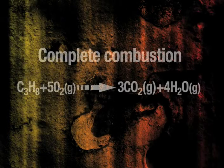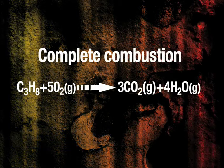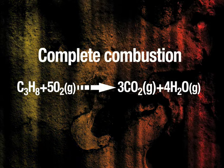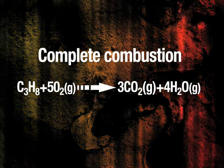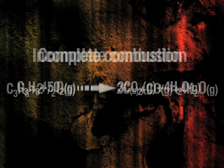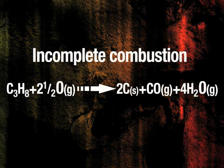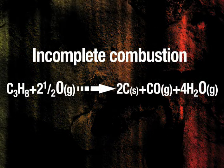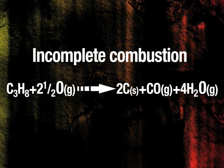There are two different types of combustion: complete and incomplete. This equation is an example of complete combustion. Incomplete combustion is harder to achieve, but here is an example. Soot is formed when there is not enough oxygen for complete combustion to occur.